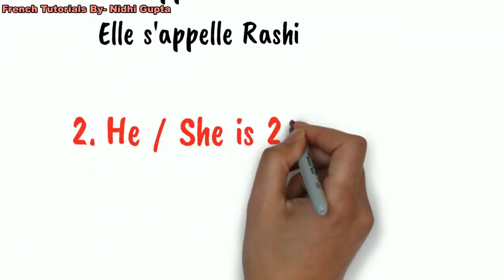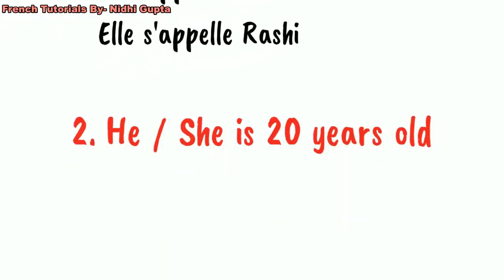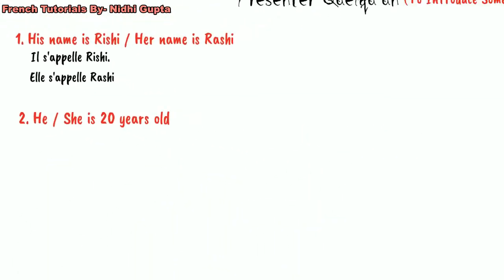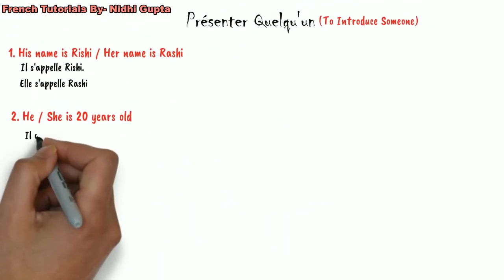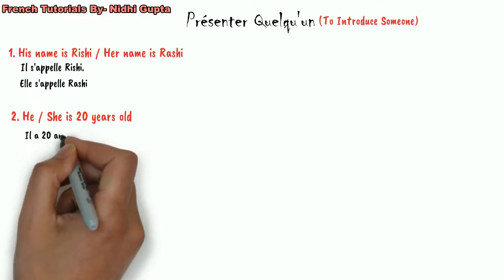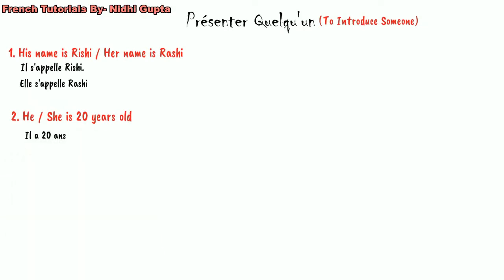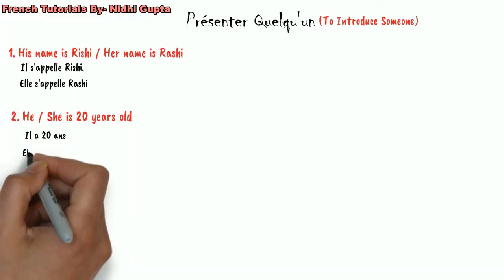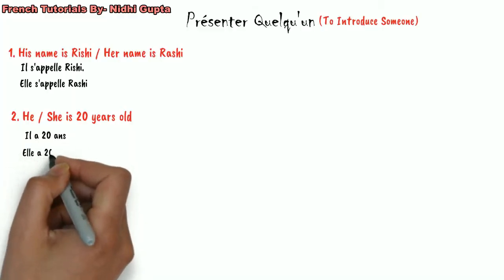The second thing we can talk about is age. So I'm going to say he is maybe 20 years old — in French, 'il a vingt ans.' And if Rashi is 20 years old, we would say 'elle a vingt ans.'